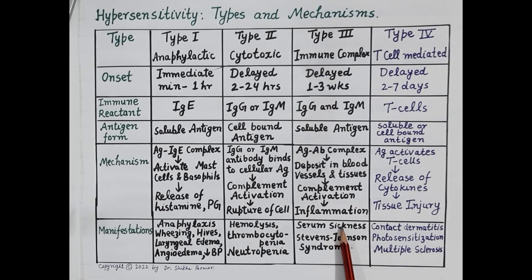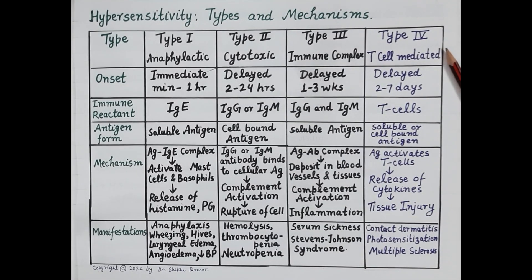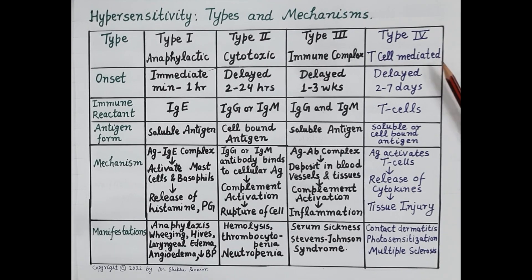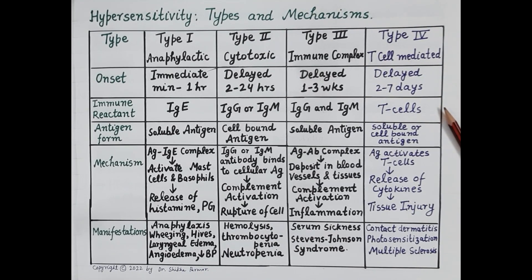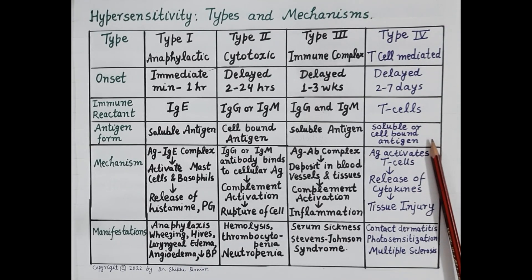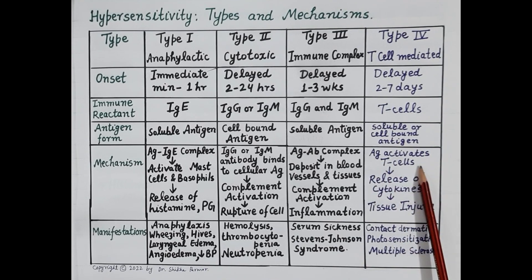Type 4 allergic reactions are caused due to the activation of T-lymphocytes, so these are also called T-cell mediated hypersensitivity reactions. The onset of allergy is delayed and usually occurs within 2 to 7 days of exposure to the drug. T-cells are activated; the antigen is either soluble or remains bound to the surface of the cell. The drug or antigen activates the T-cell.